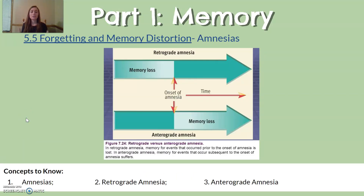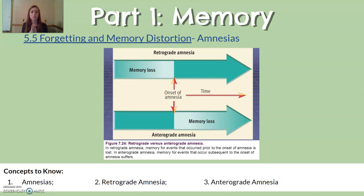True amnesias involve memory loss not caused by an underlying disease — they can be caused by trauma, stress, brain injury, or substances. Retrograde amnesia is when, following an incident, you are no longer able to retrieve memories from before that occurrence — you can't retrieve old memories. Anterograde amnesia is when, following that situation, you are no longer able to make new memories, though you can still remember old ones.